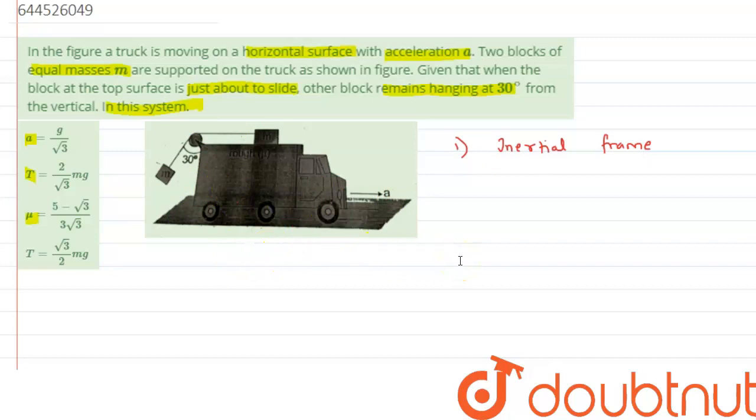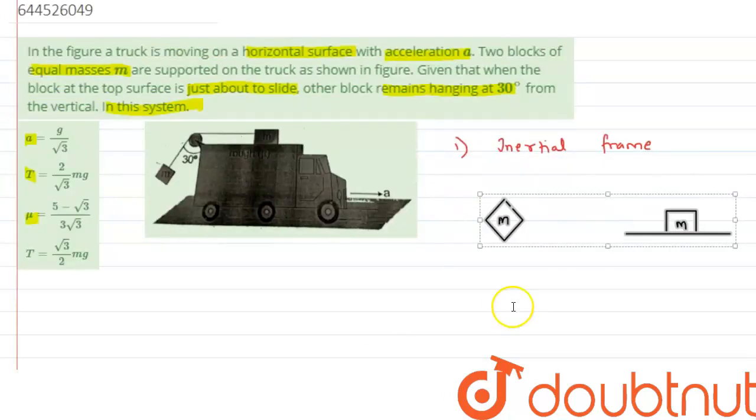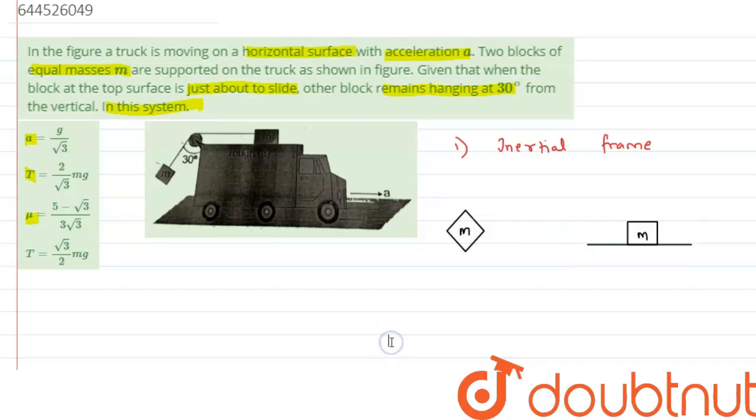Alright, so let's try to understand this by using the FBD for the given figures. So we can say here there are two blocks as we have taken over here.